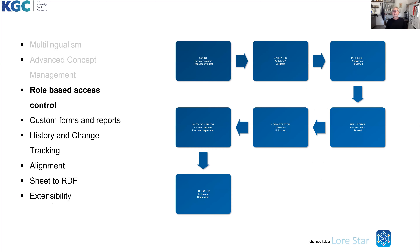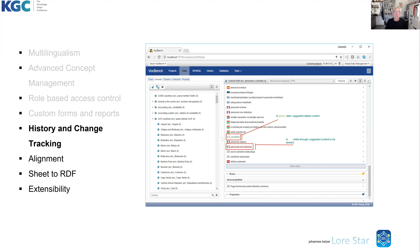There is a fine-grained, sophisticated role-based access control. There are different roles, and roles can have different access rights. The main roles are guest, validator, publisher, ontology editor, administrator, and term editor — because in a collaborative environment it is necessary to fine-tune access rights for all participants. Custom forms and reports are another often-requested feature. History and change tracking means that any change made to a vocabulary is registered in the database as a triple and can be compared to further versions or rolled back.